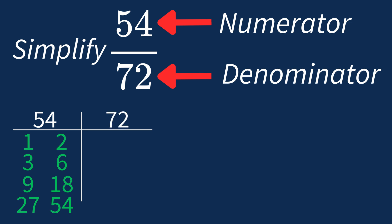For 72, the factors are 1, 2, 3, 4, 6, 8, 9, 12, 18, 24, 36, and 72.